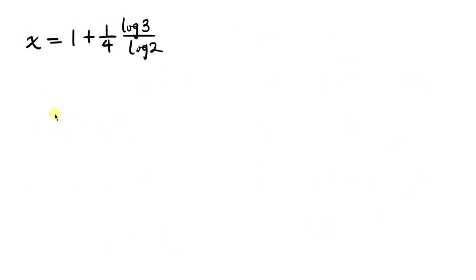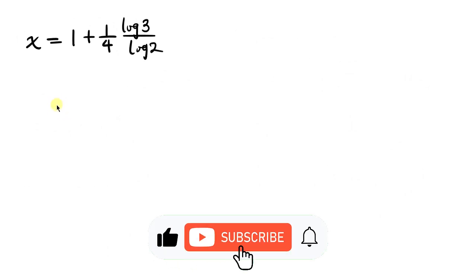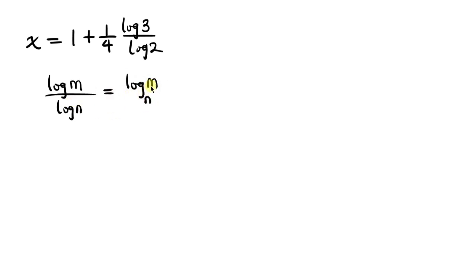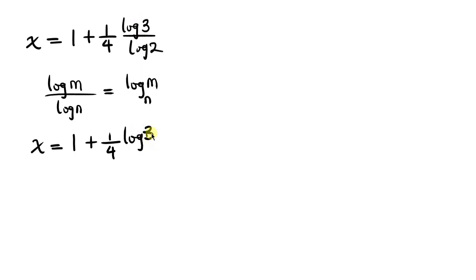The final part of our solution is to apply the change of base formula for logarithms, which says log m over log n equals log of m base n. Applying this to log 3 over log 2, we get the value of x to be 1 plus 1 over 4 times log 3 base 2. And that is our final answer.